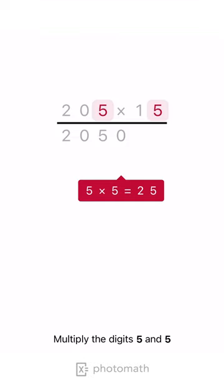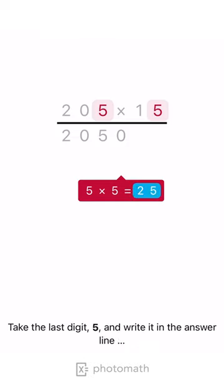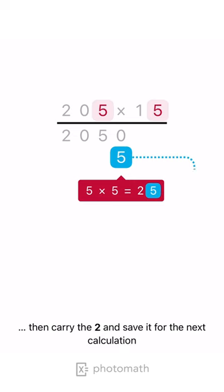Multiply the digits 5 and 5. Take the last digit, 5, and write it in the answer line. Then carry the 2 and save it for the next calculation.